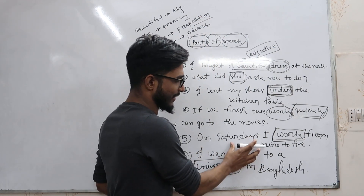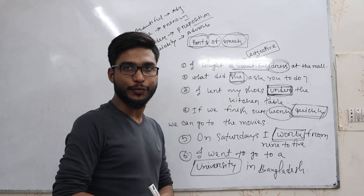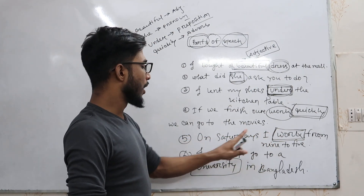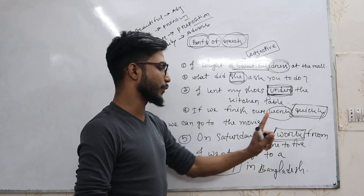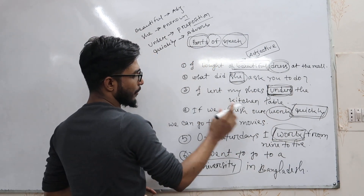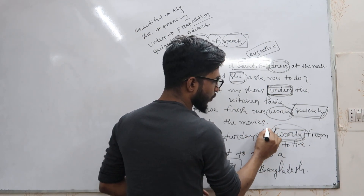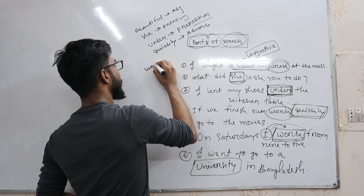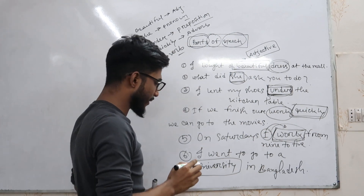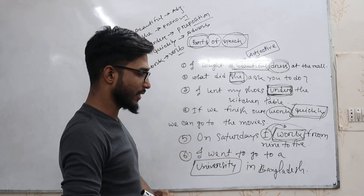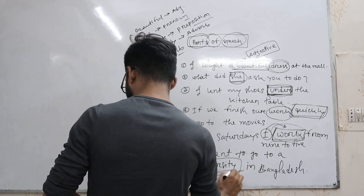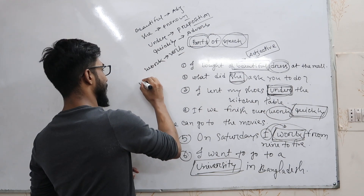Number five: One Saturday, I work from 9 to 5. Here, 'work' is a verb because 'I' is the subject and 'work' is the verb. Number six: I'm going to go to a university in Bangladesh. 'University' is a noun.